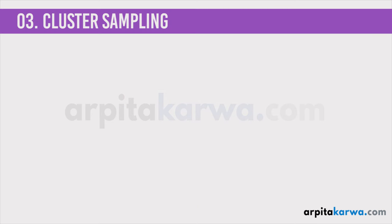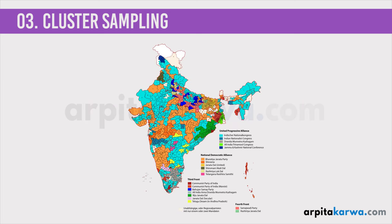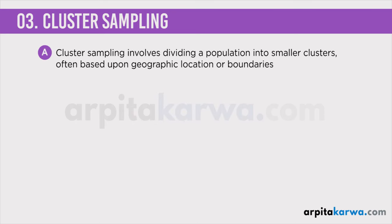Next in line is cluster sampling. A cluster is basically a group which is often based upon geographical location or boundaries. For example, during election time we divide India into different zones, and those zones are clusters. Cluster sampling involves dividing the population into smaller groups or clusters, often based on geographical location or boundaries, and then a random sample of these clusters is selected.